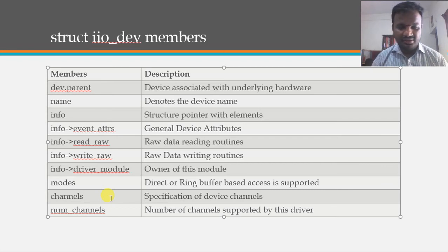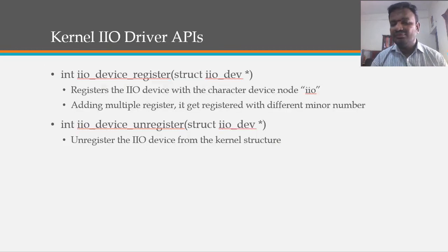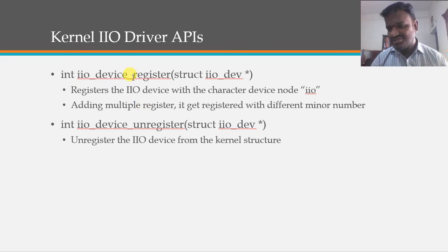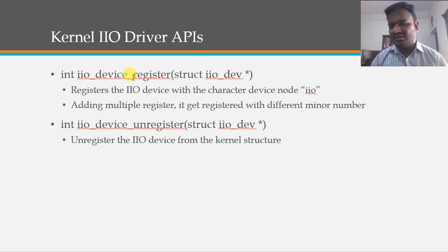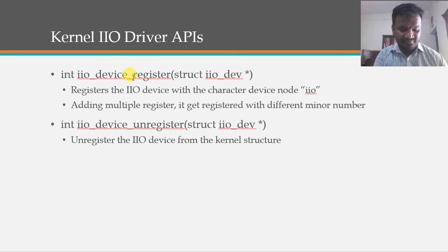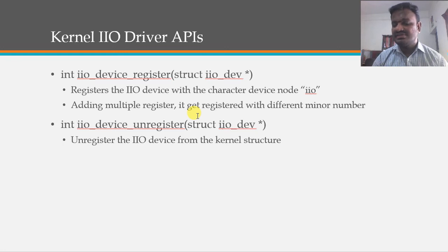Key kernel IIO APIs include iio_device_register, which registers the filled iio_dev structure with a character device node, and iio_device_unregister, which unregisters the IIO device from kernel space. Multiple drivers can register — Driver A, Driver B, etc. — each getting different minor numbers under the IIO major number.